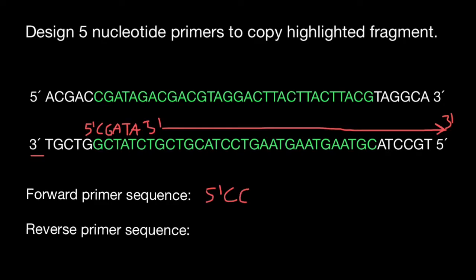So forward primer sequence is going to be five prime end, C, G, A, T, A, and three prime end. As for the reverse primer sequence, again, new strand of the DNA only grows from five prime end to three prime end.